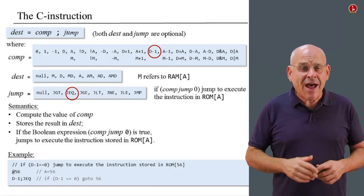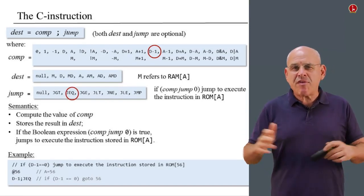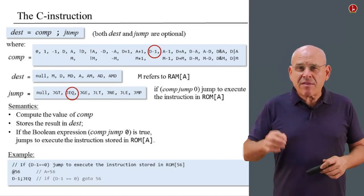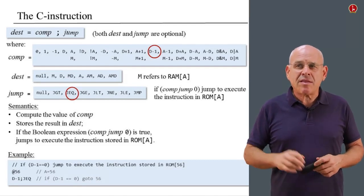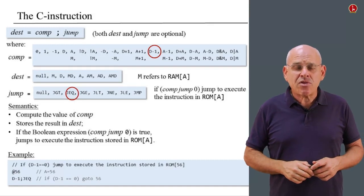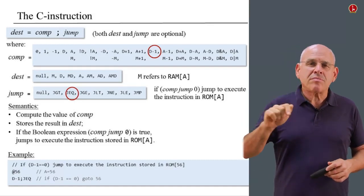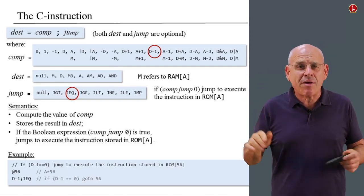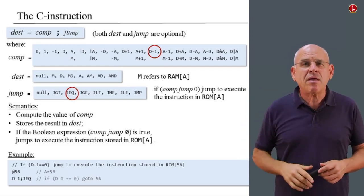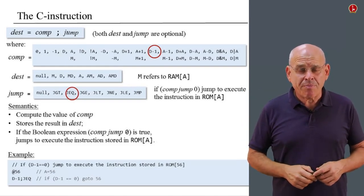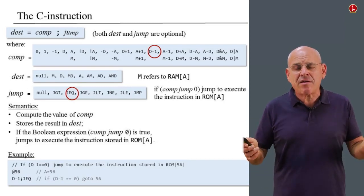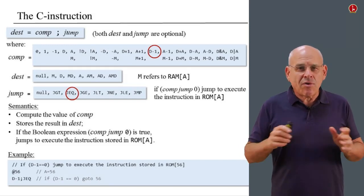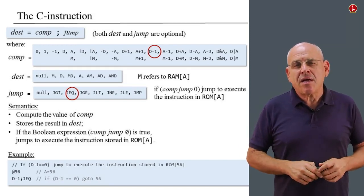Notice that we also have an unconditional jump. If I simply want to jump to 56 without checking any condition, I say jump. More precisely, the syntax requires that I say 0;JMP, and this will cause an unconditional jump. Everything I've described here is fully documented in the book and on the website, so you don't really have to remember every detail — you can refer to them later on.